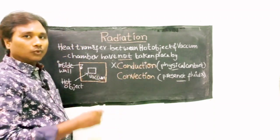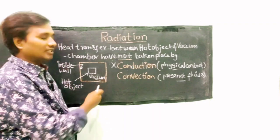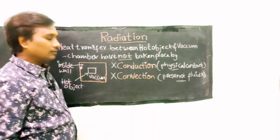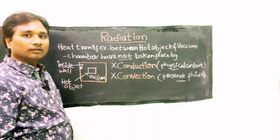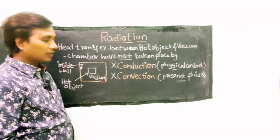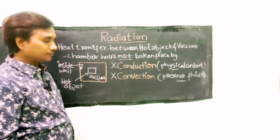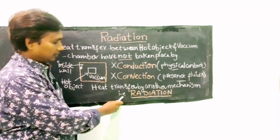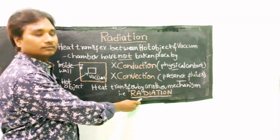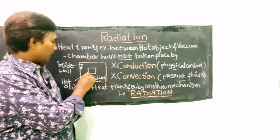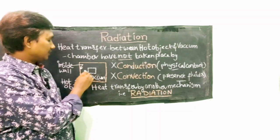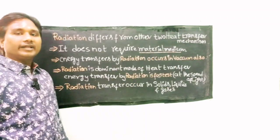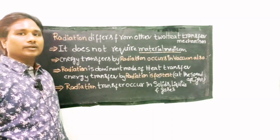There is no air, only vacuum, so there is no convective mode of heat transfer either. The heat transfer occurs by another mechanism, which is radiation. The hot object loses its heat to the inside wall by means of radiation.